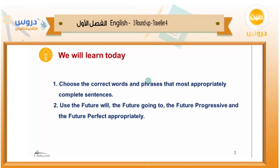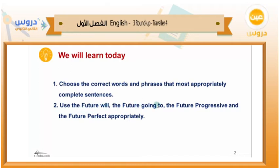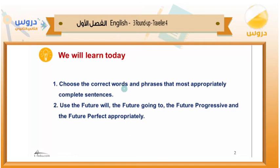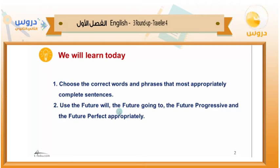We usually start with our objectives. We have two for today. First, choose the correct words and phrases that appropriately complete sentences. Second, use the future will, the future going to, the future progressive, and the future perfect appropriately. We're going to learn a lot of great vocabulary today and also almost all the future tenses.